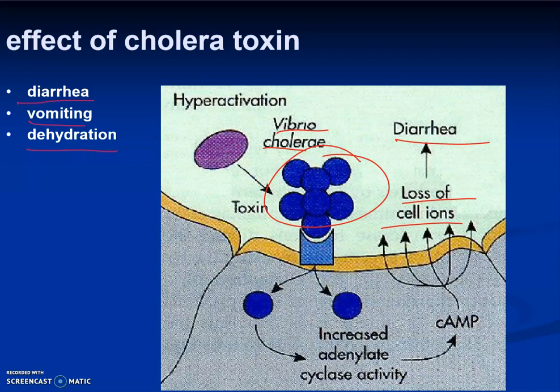Here's how the cholera toxin works: Vibrio cholerae's toxin binds to a receptor and increases adenylate cyclase activity through a second messenger pathway. This raises cyclic AMP levels, which opens ion channels, leading to a massive loss of ions. Water follows the ions, producing the severe diarrhea, dehydration, and massive electrolyte loss characteristic of cholera.